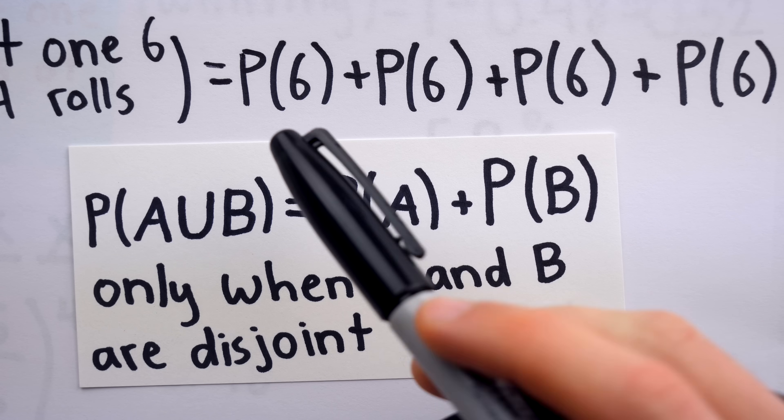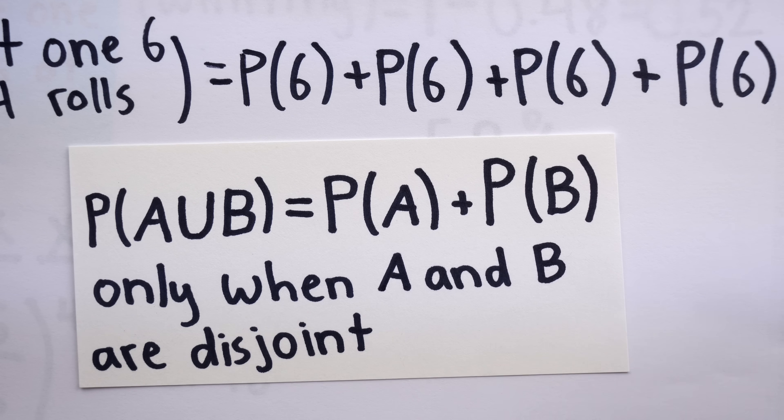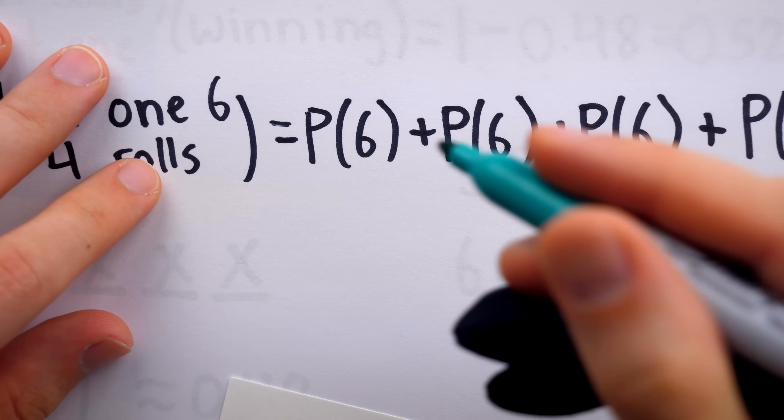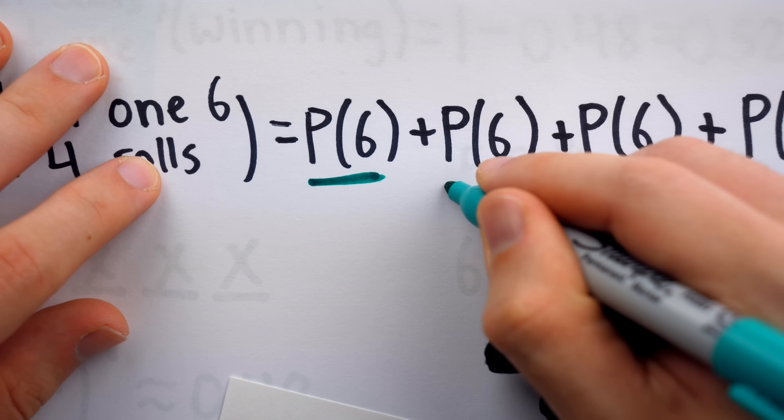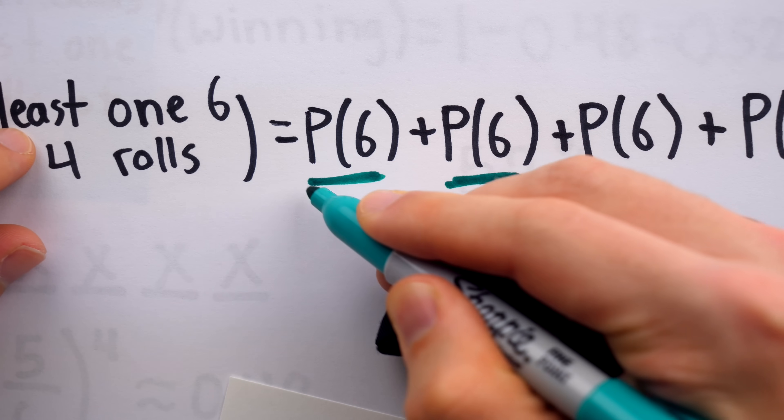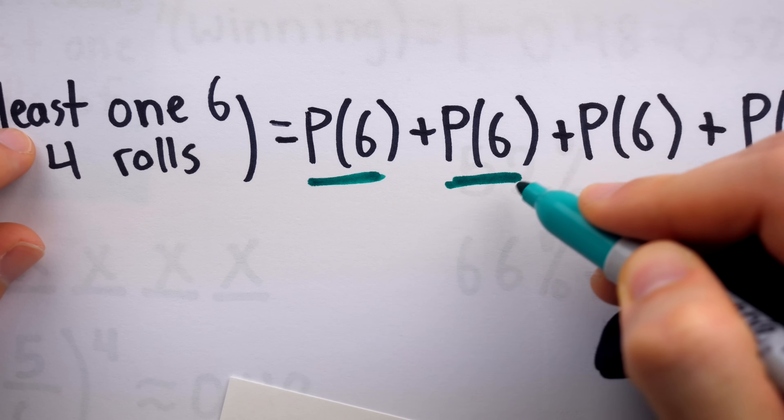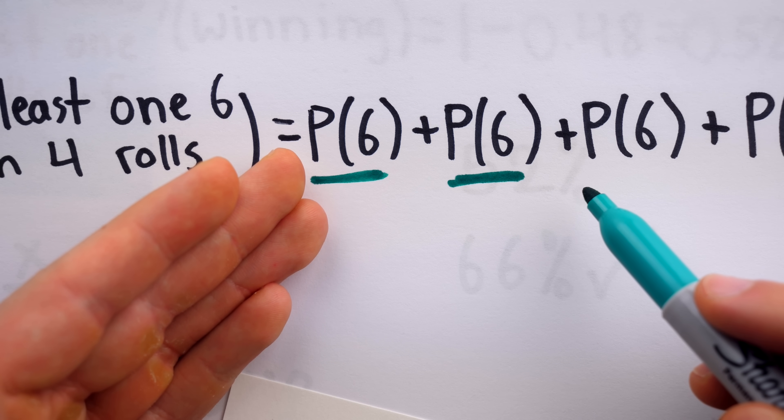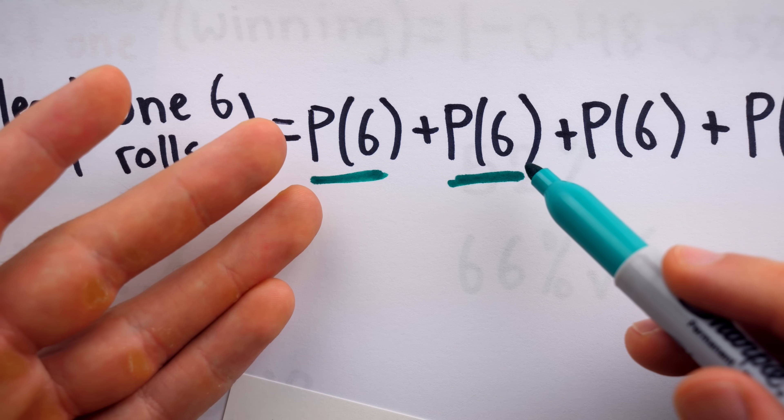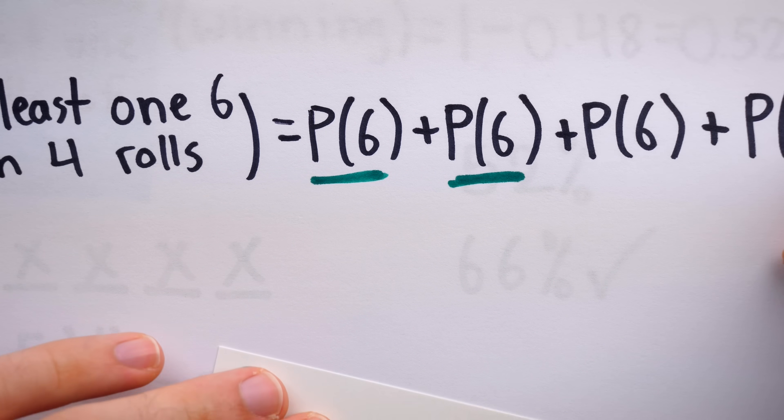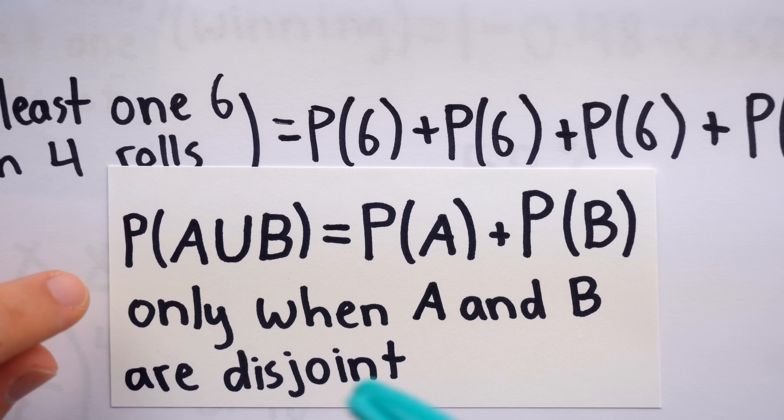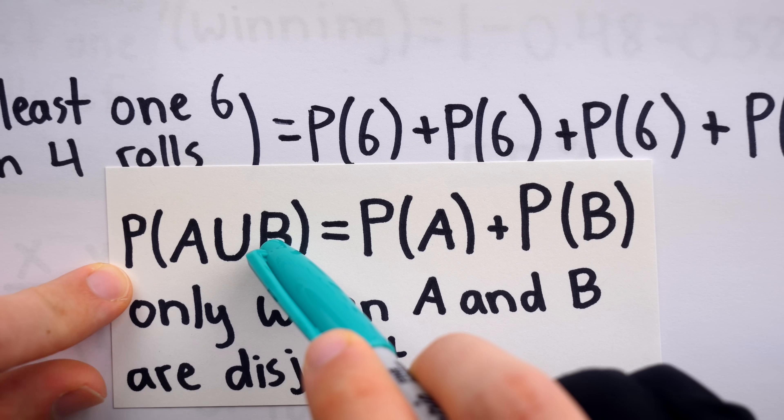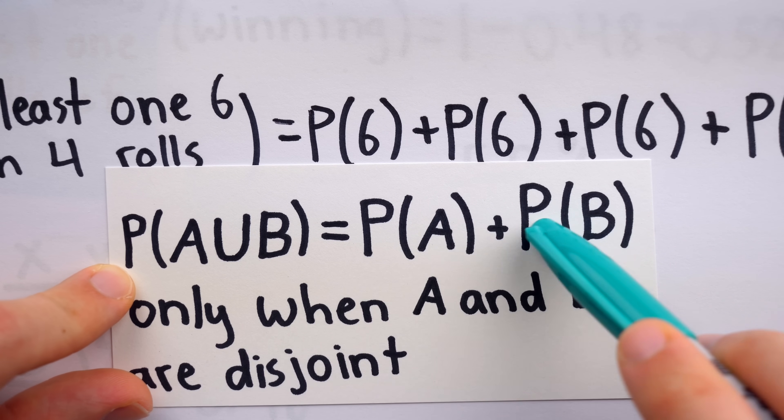Because it's possible to roll a six on the first roll and the second roll, some of the probability counted here is also counted here, and thus, Damiré has double-counted probability, using this technique, and that's why he overestimated his odds of winning the game. So this simple addition rule is only going to work when the events are mutually exclusive. They can't occur simultaneously, and thus, when you add their probabilities, you're not double counting anything.